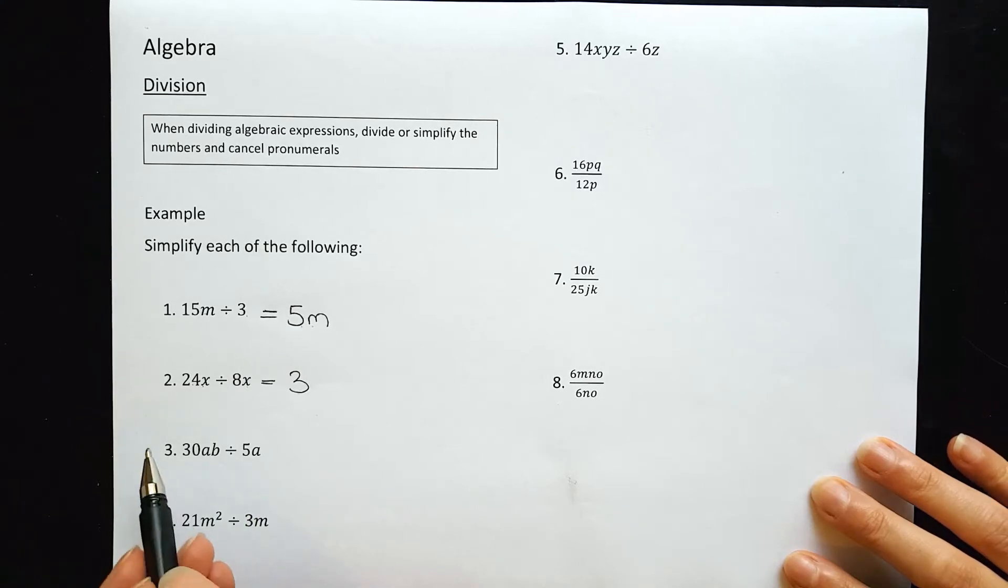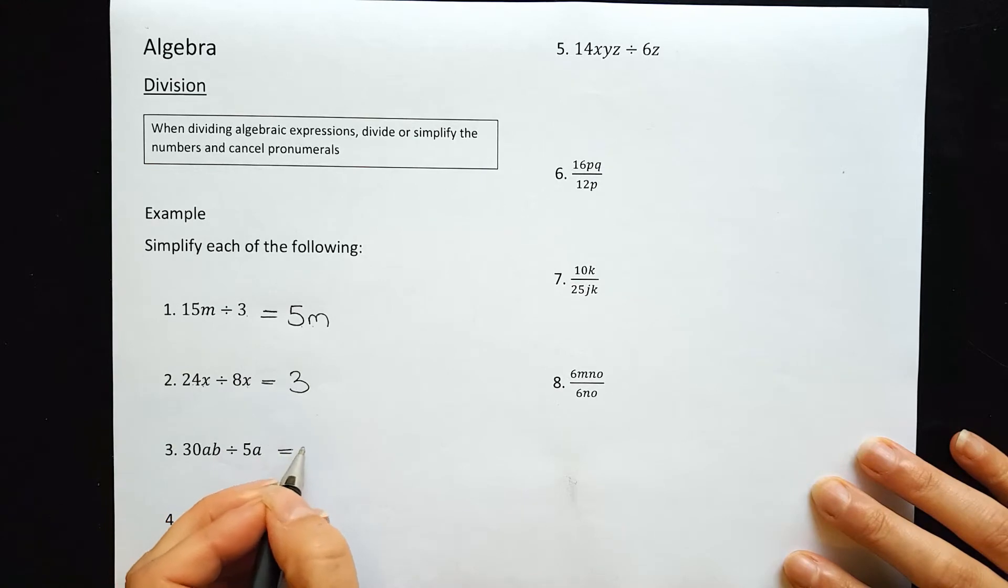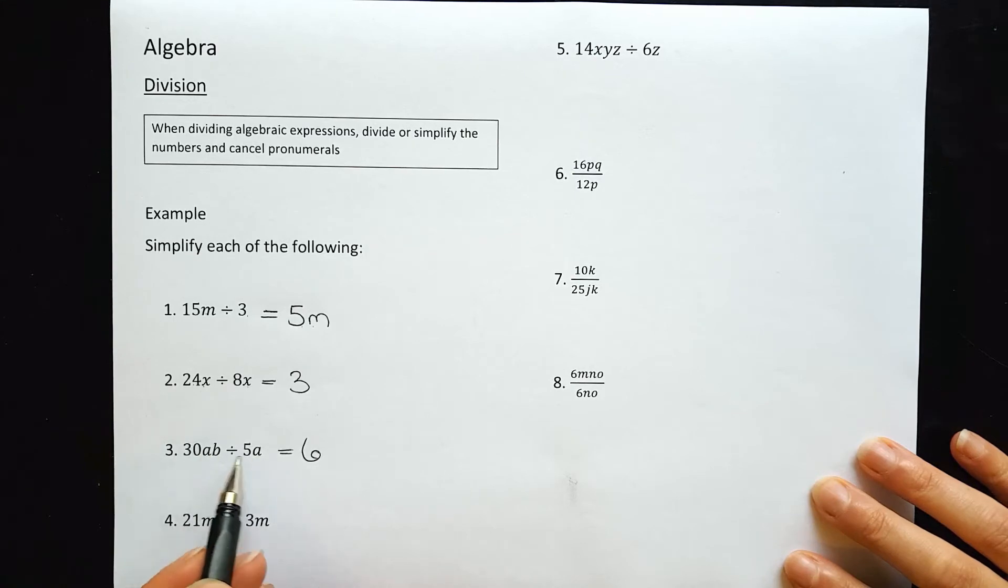Question 3: 30ab divided by 5a. First, divide the numbers: 30 divided by 5 goes 6 times. Now let's look at the letters. An 'a' in the first and second term will cancel out. All that is left is 'b' from the first term, which sits with the 6.